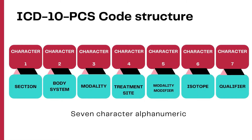These are the seven characters in this section. The first character is the section. The second character is the body system. The third character is for the modality used. The fourth character is for the treatment site. The fifth character provides the modality modifier. The sixth character is for the isotope that is used. And the seventh character identifies if the procedure is intraoperative or otherwise.